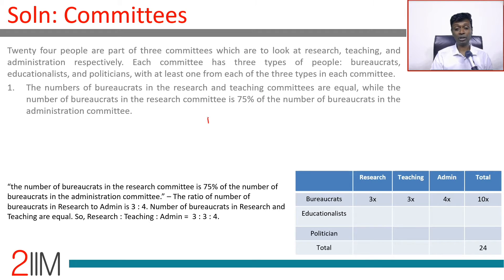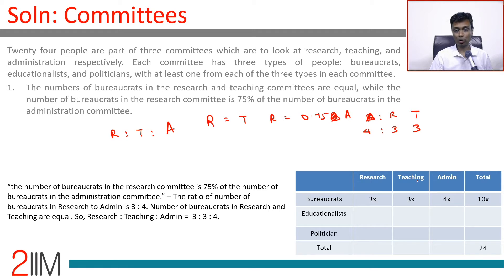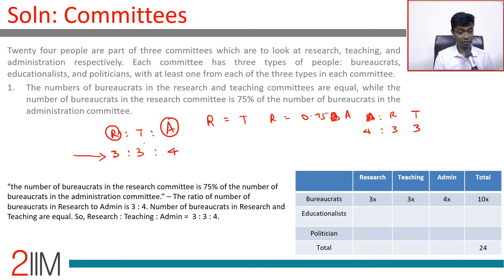The number of bureaucrats in research and teaching committees are equal. Taking bureaucrats: R = T and R = 0.75 × admin B. Whatever admin B is, research is three-fourths of that — or bureaucrats for research-to-admin should be in the ratio 4:3. Teaching equals research, so research to teaching to admin is 3:3:4. We don't want to think in terms of 0.75 — better to think in terms of 3, 3, 4. So putting it as 3x, 3x, 4x, totalling 10x.